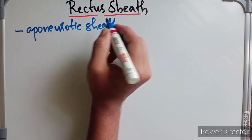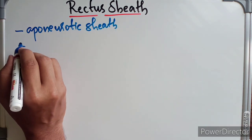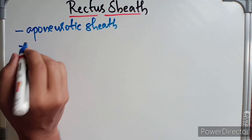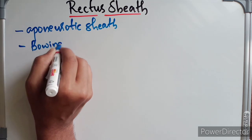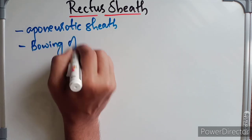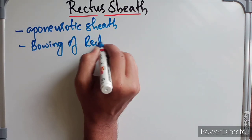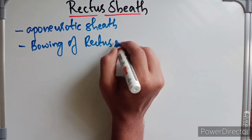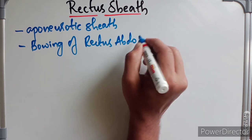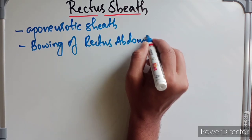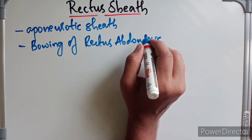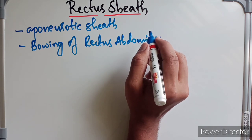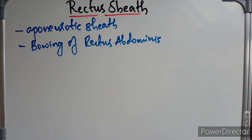What are the functions of the rectus sheath? It checks the bowing of the rectus abdominis muscle, and it maintains the strength of the anterior abdominal wall. So these are the functions of the rectus sheath.